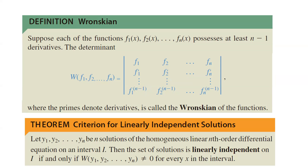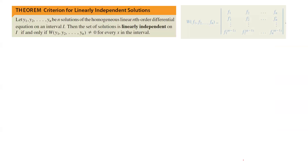The theorem says: let y1, y2, yn be n solutions of a homogeneous linear nth-order differential equation on an interval i. Then the set of solutions is linearly independent on interval i if and only if the Wronskian is non-zero for every x in that interval. So now we have a nice shortcut. Let us apply this shortcut.